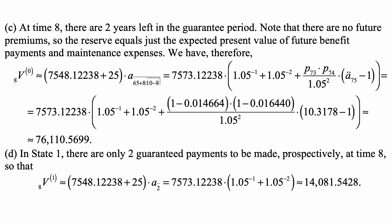So we can calculate this, we just need to look up p73 and 74 in the table. Of course, it's not p that is given in the table, it's q, so we need to write (1 - q73) × (1 - q74). Everything else is straightforward. When we plug those in and do the calculation, this comes out to be 76,110.5699.